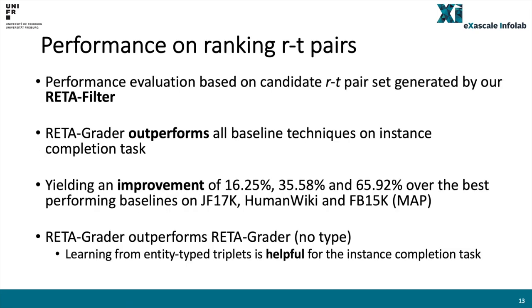Based on the candidate relation-tail pair set generated by our RETA filter, we then evaluate the performance of our RETA grader on our instance completion task. We observe that our RETA grader consistently outperforms all baseline techniques. Taking MAP as an example, it yields an improvement between 16.25% and 65.92% over the best performing baselines on the three datasets. Moreover, compared to RETA grader no-types, which is the variant without learning from the schema, our RETA grader learning from both triplets and their corresponding schema significantly achieves better performance. This shows that learning from entity type triplets is indeed helpful for the instance completion task.